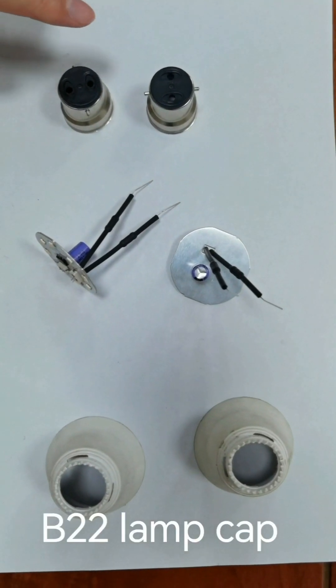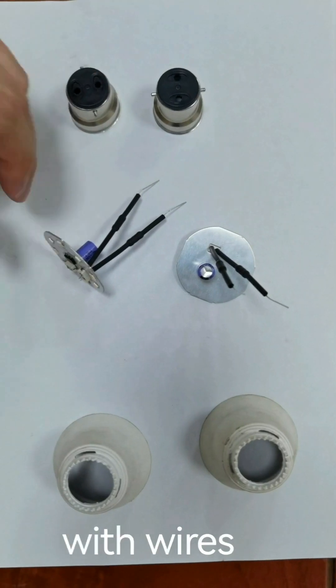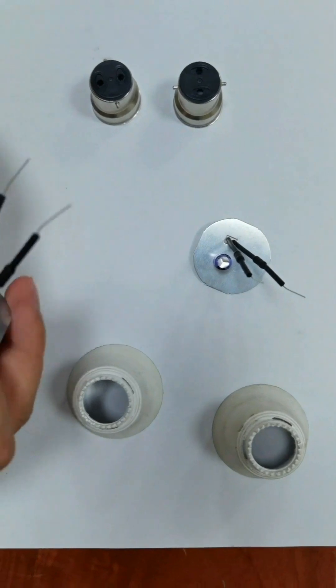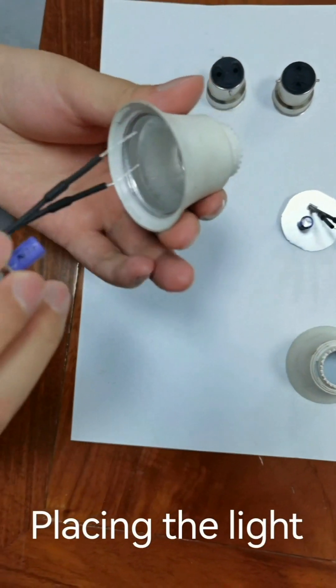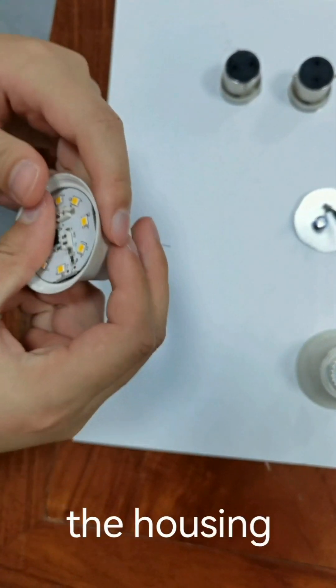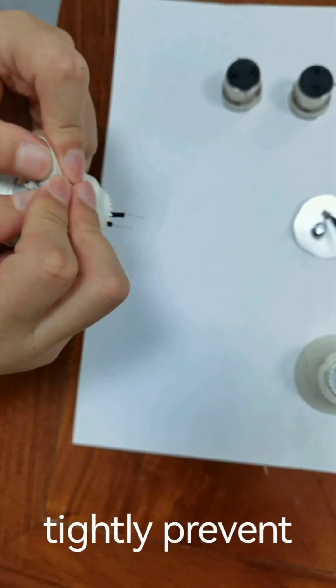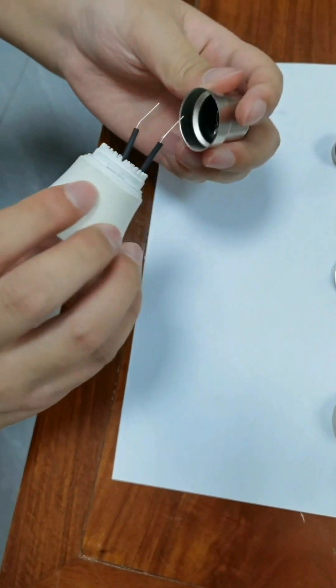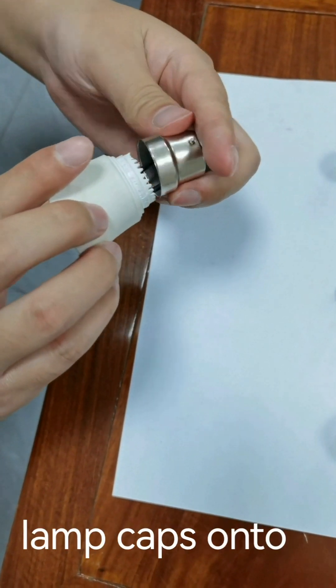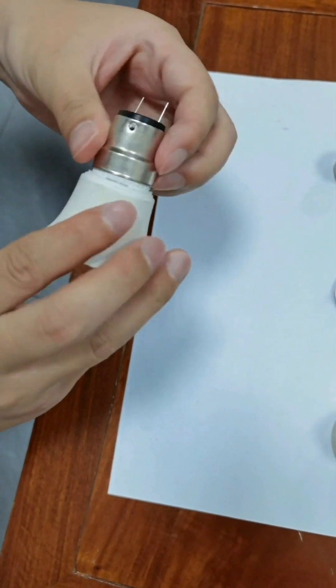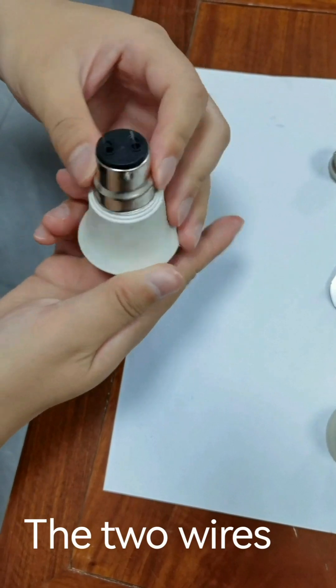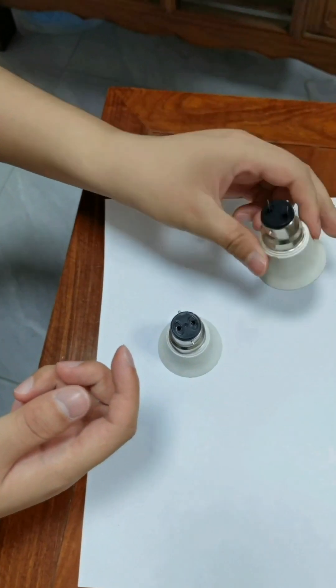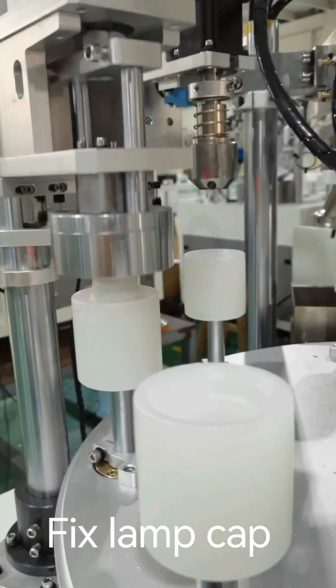B22 light cap, light source board with wires, and housing. Placing the light source board into the housing and pressing it tightly prevents it from falling out when the housing is inverted. Then install B22 lamp cap on the housing. The two wires coming out from the two small holes respectively.